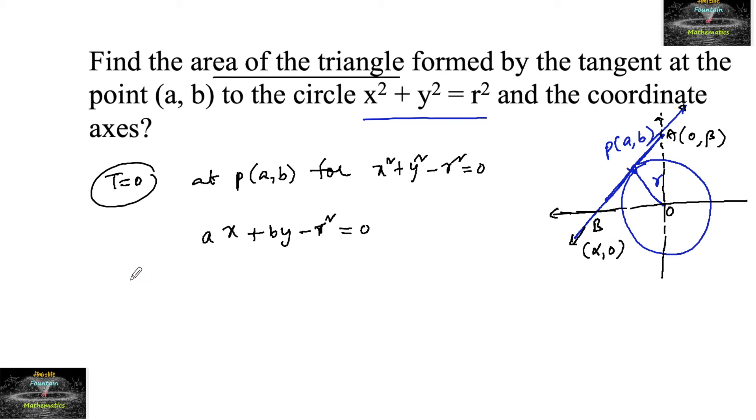When the tangent meets the x-axis at point B, the y-coordinate is 0. So we will write a·x, or we can say a·α + b·0 - r² = 0, which gives α = r²/a. So we can say point B is (r²/a, 0).